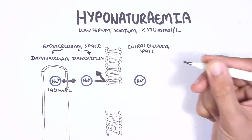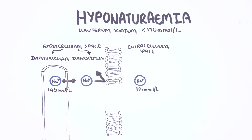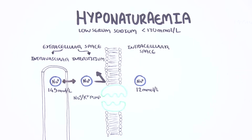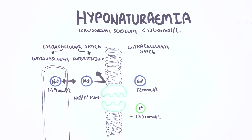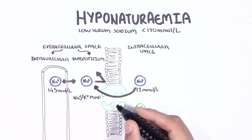In the intracellular compartment, there is about 12 millimoles per liter of sodium. Sodium is a positively charged ion, the main cation in the extracellular space. The sodium-potassium pump maintains higher concentrations of sodium in the extracellular space by exchanging it with potassium ions. Hence, the main cation in the intracellular space is potassium, about 155 millimoles per liter.